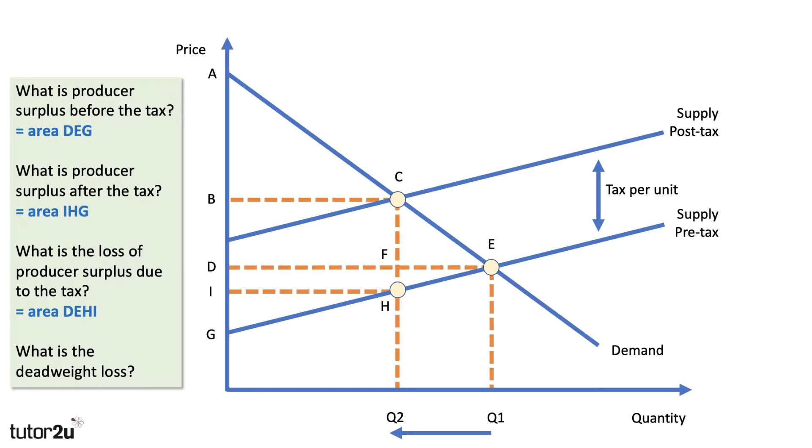What's the deadweight loss? Well, the deadweight loss, if you remember our previous video on consumer surplus, the deadweight loss is the loss of producer surplus that doesn't just go to the government in tax. D, F, H, I was producer surplus, but that now goes to the government in tax. Can you see that? So what's the deadweight loss? Have a go. The answer is F, E, H. Indirect taxes can lead to a deadweight loss of consumer and producer surplus.